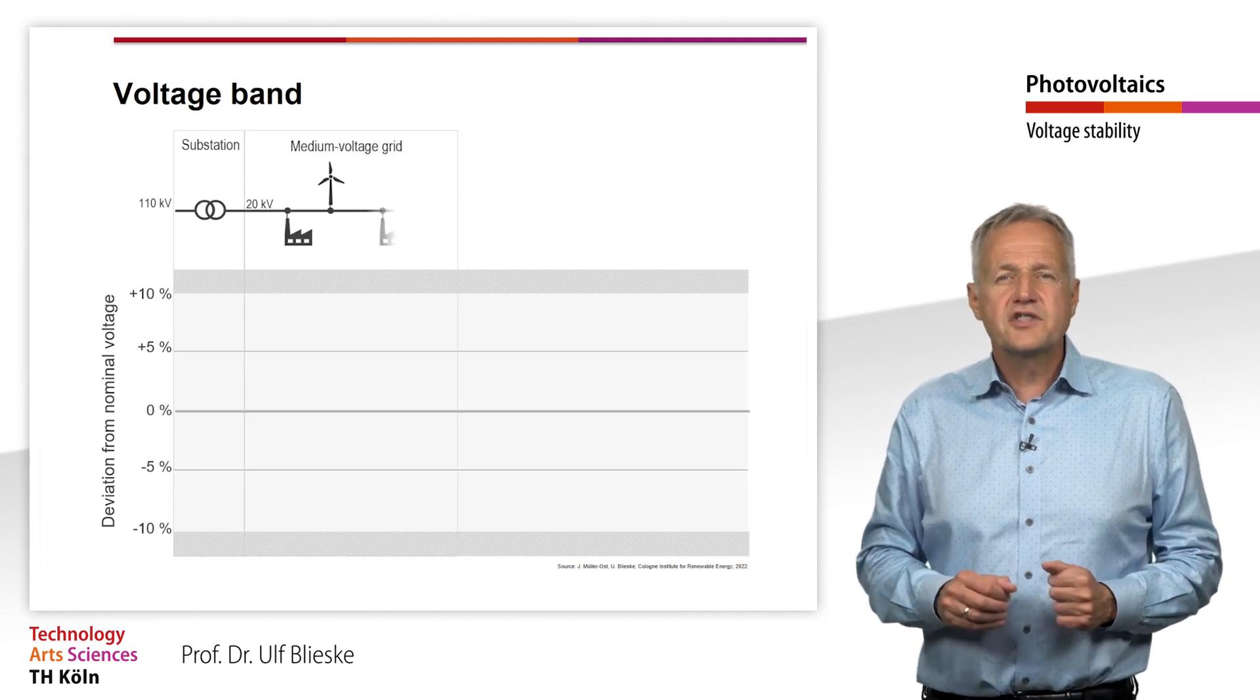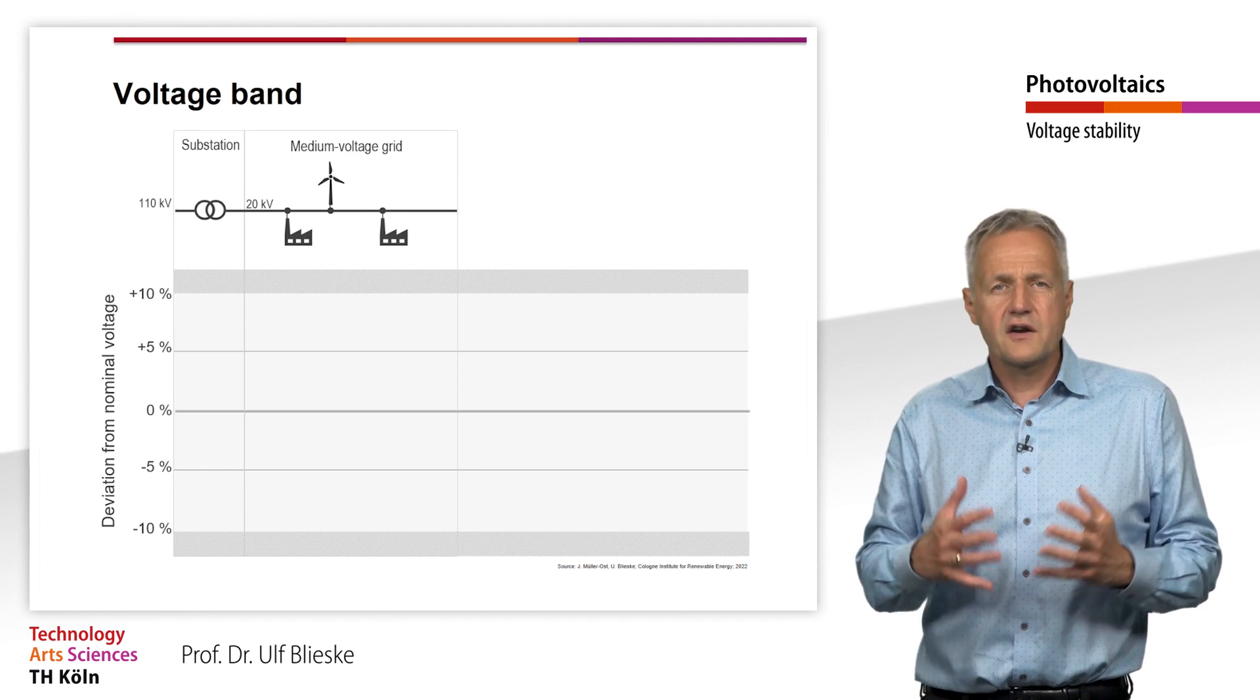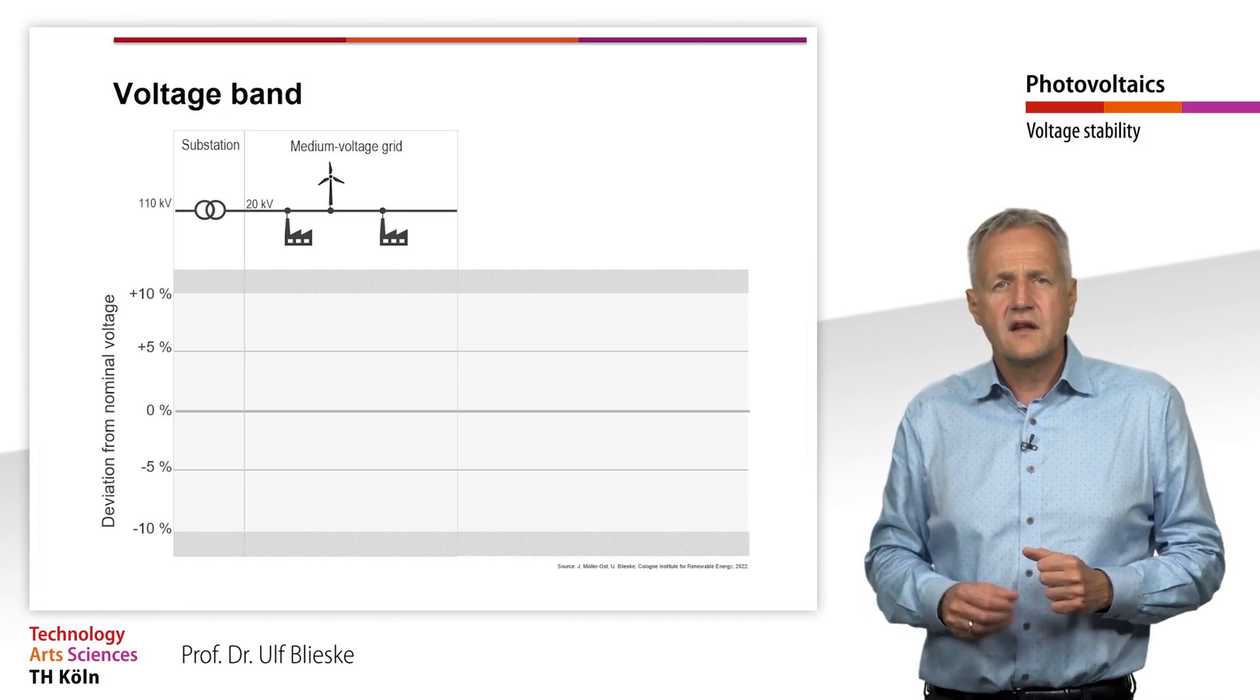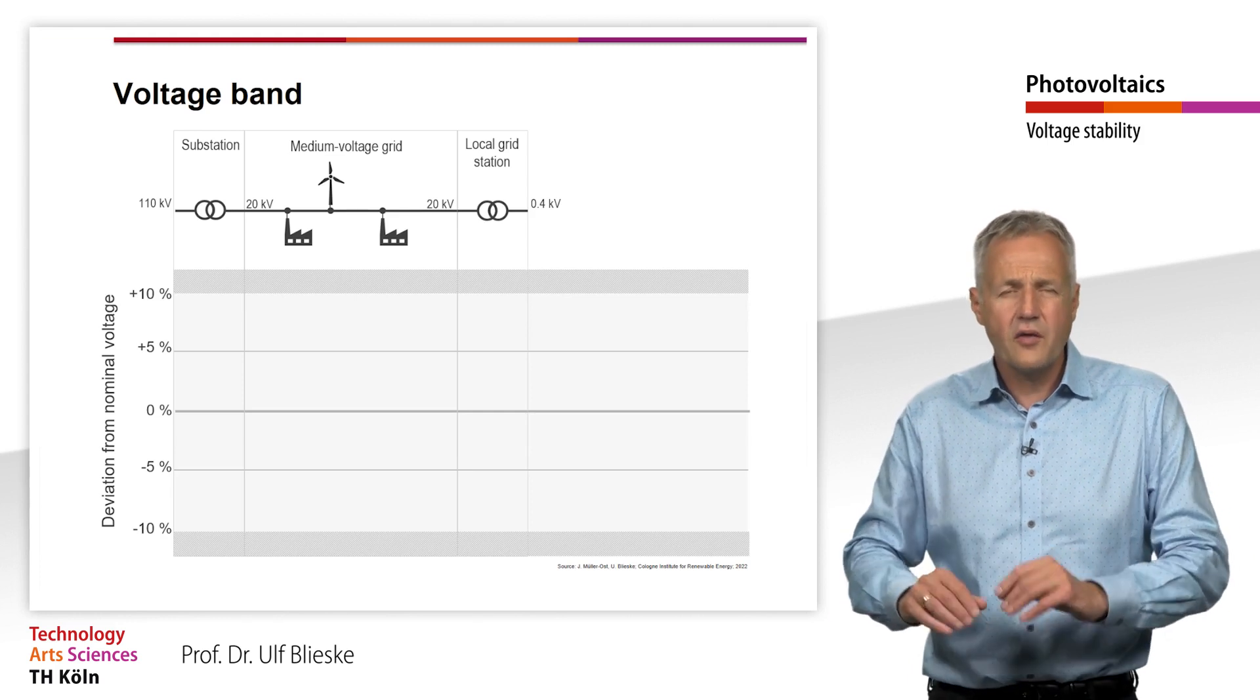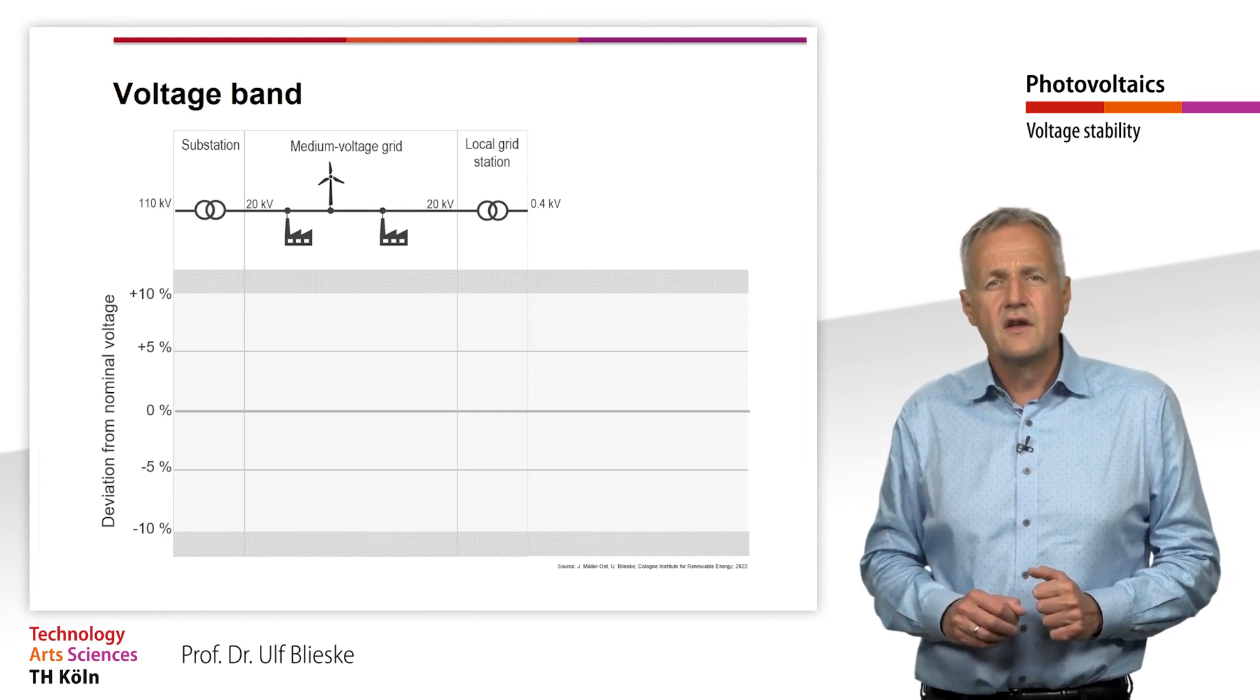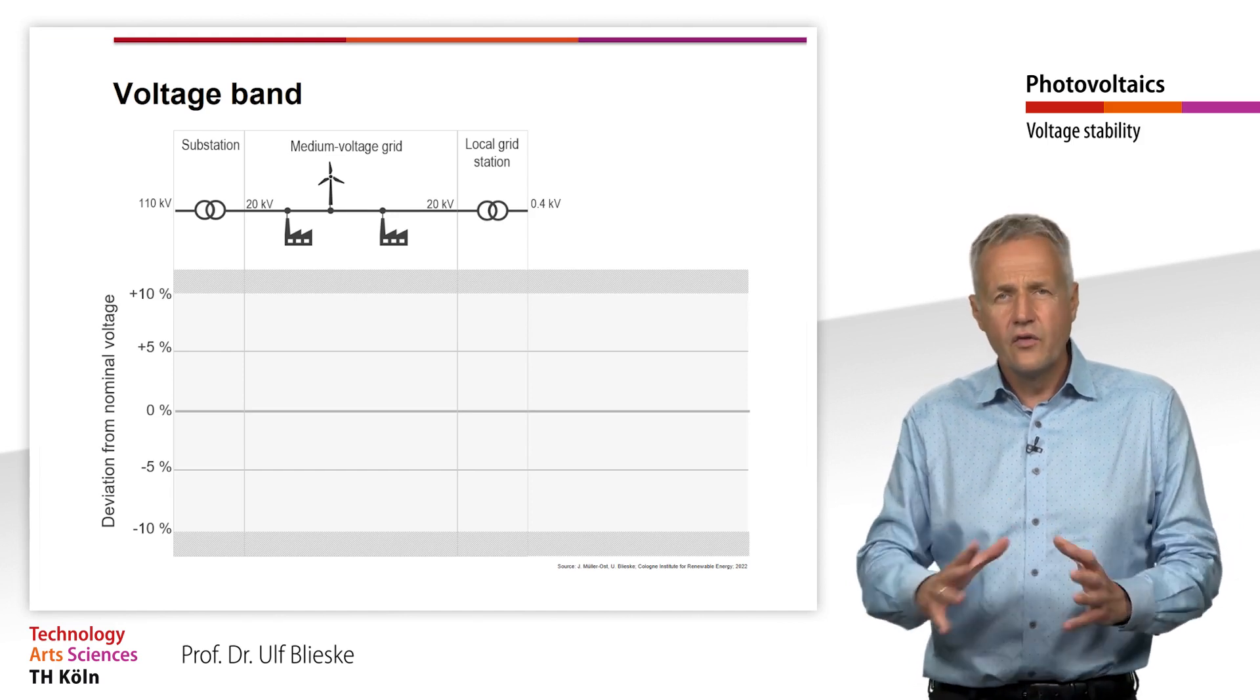In the medium voltage grid, some consumers and power plants are connected. In the local network stations, the voltage is finally transformed to 400 V with which households are supplied in the low voltage grid.